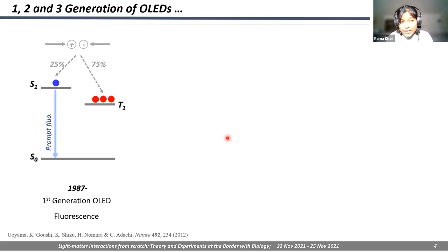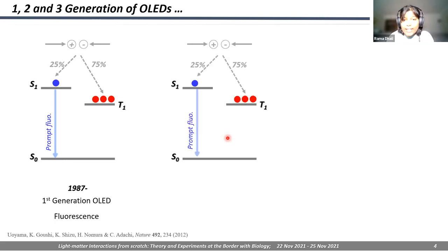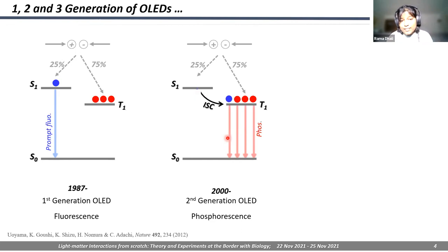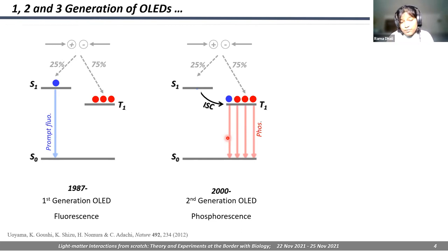Depending on the method — whether light emits from the singlet or triplet — we have three different generations of OLED. The first generation is based on singlet fluorescence, where the triplet is a dark state because it has a different spin, limiting maximum efficiency to 25%. If there is a way to get light out of the triplet, we can go to 75%. That is the second generation, based on phosphorescence, using a heavy metal to increase inter-system crossing between singlet and triplet, theoretically achieving 100% efficiency. However, using heavy metals involves spin-forbidden processes, is not color-pure, and is not eco-friendly.